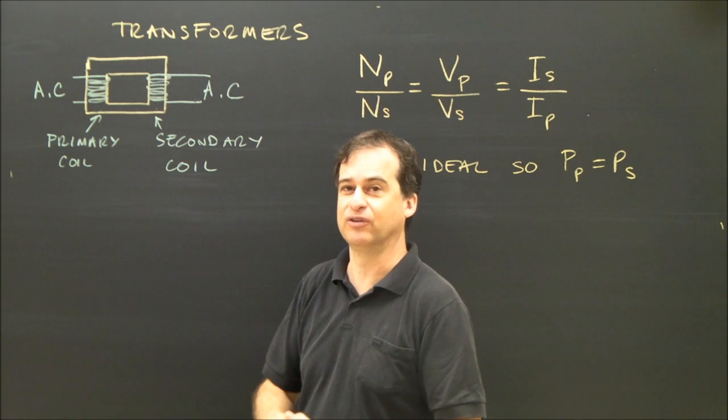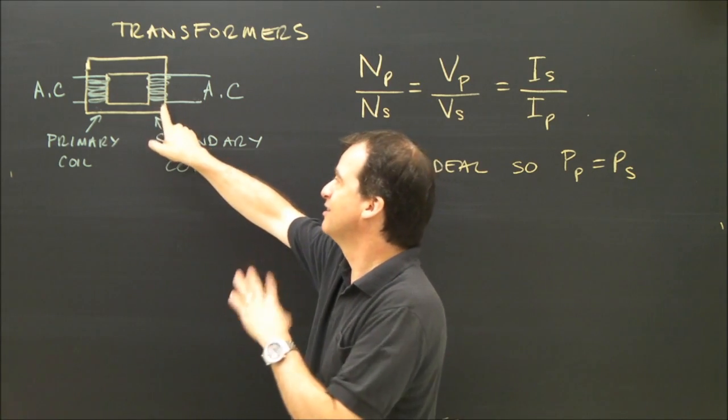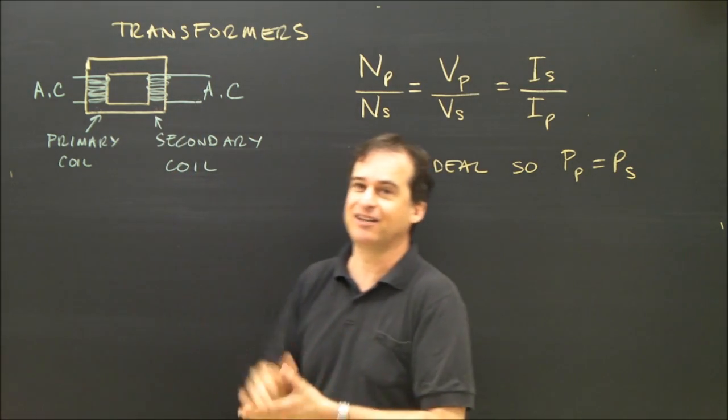If I have 100 loops on this side and 50 loops on this side, this side has half as many loops. So the voltage on this side will actually be exactly half as much. So if I have 10 volts alternating current here, I'll have 5 volts alternating current here.